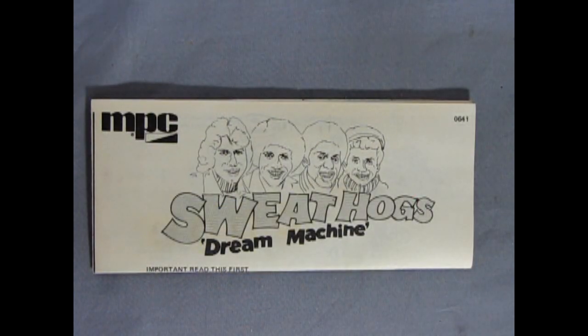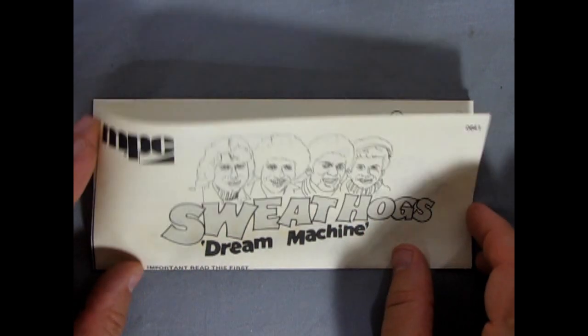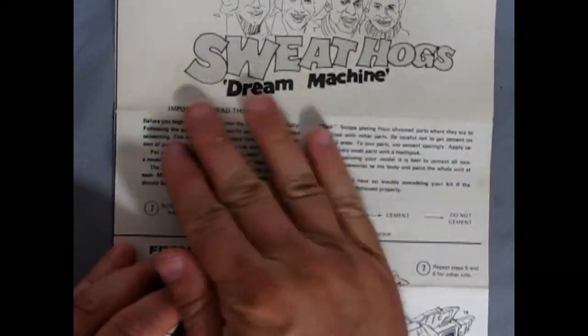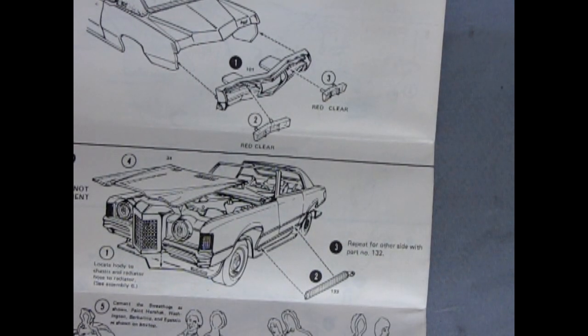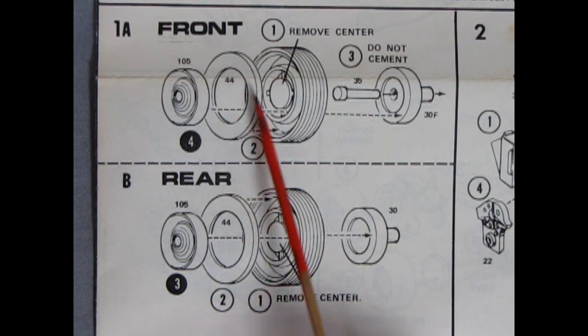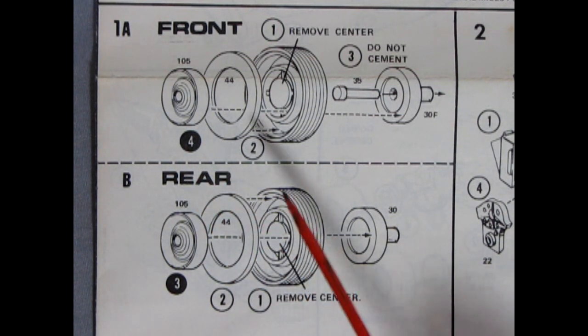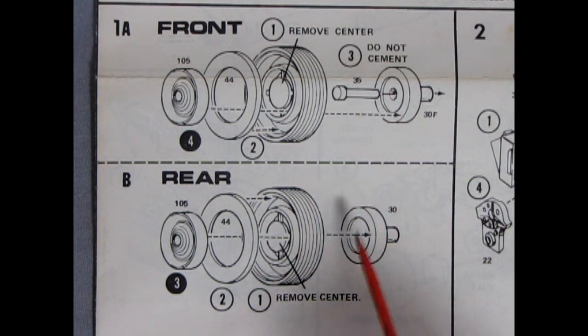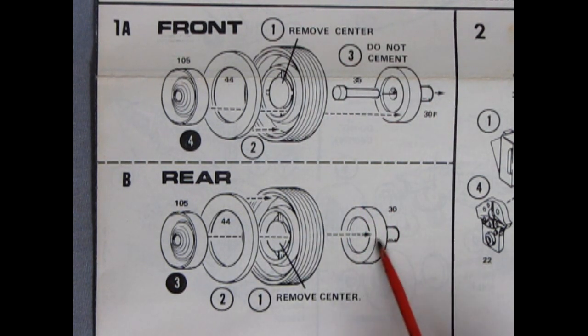So here we have our Sweat Hogs Dream Machine and all our little stars from Welcome Back Cotter. And then as we open this up, we can see it's the typical brochure type of the two-page fold flip and triple fold. Here we have our wheels and tires, and there's a nice big fat white wall insert, as well as these sort of sombrero style hubcaps. And then we've got our front rubber tires, and our front wheel backs, and the rear wheel back as well. These ones of course have the peg going through, and these ones are flat.